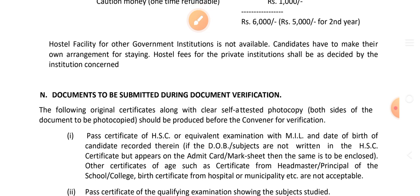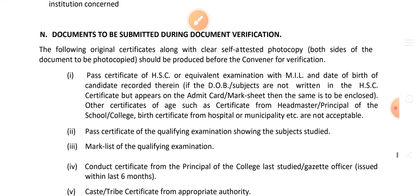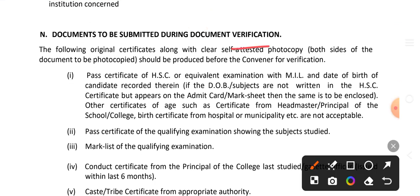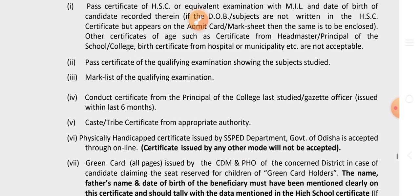Documents to be submitted during document verification: original certificates along with clear self-attested photocopies (both sides) must be produced. Required documents include: pass certificate and marksheet of HSC equivalent examination showing date of birth; admit card if date of birth not in certificate; age certificate from school headmaster or principal; pass certificate of qualifying examination; marksheet of qualifying examination; and conduct certificate from principal issued within the last six months.